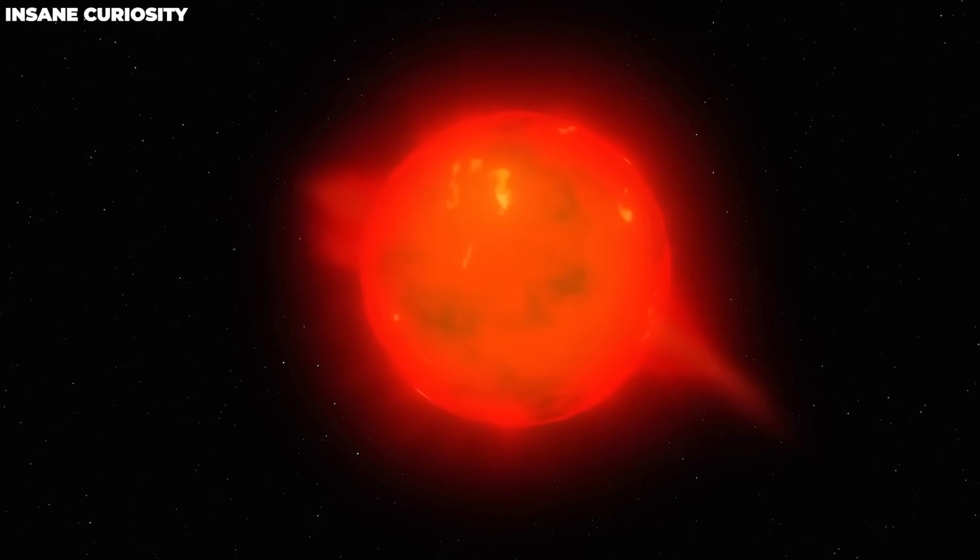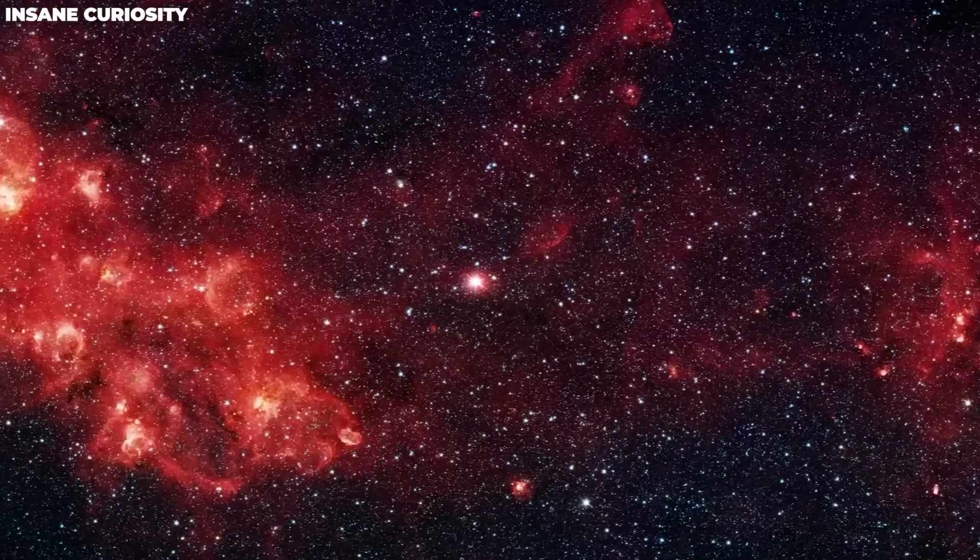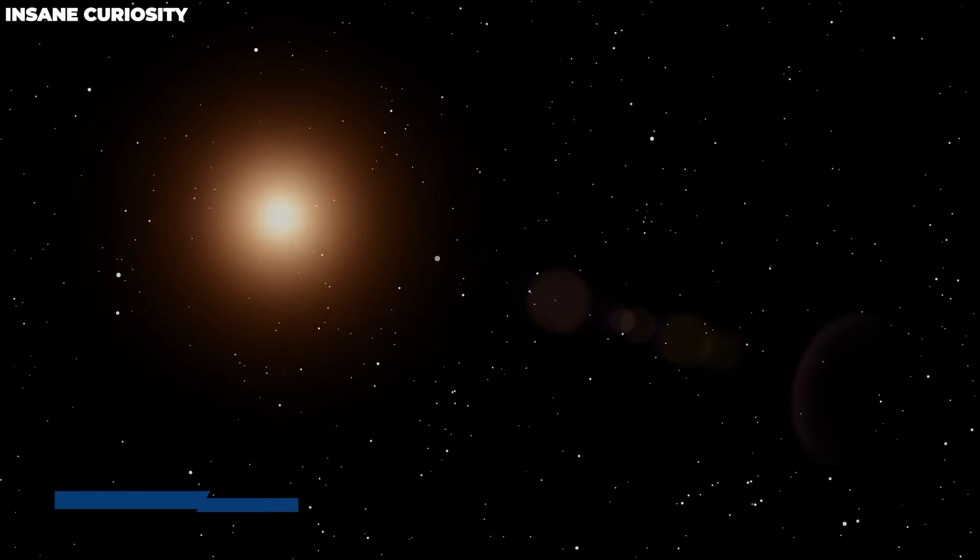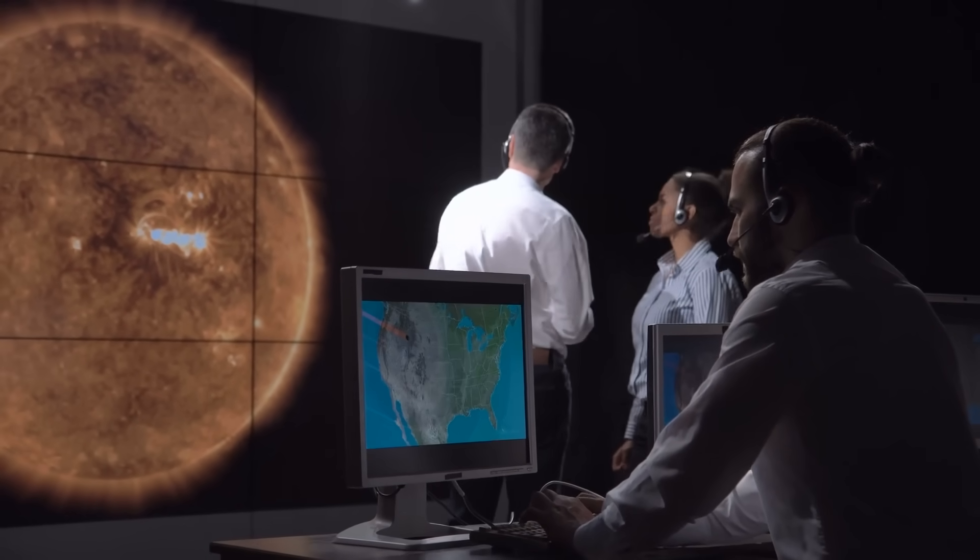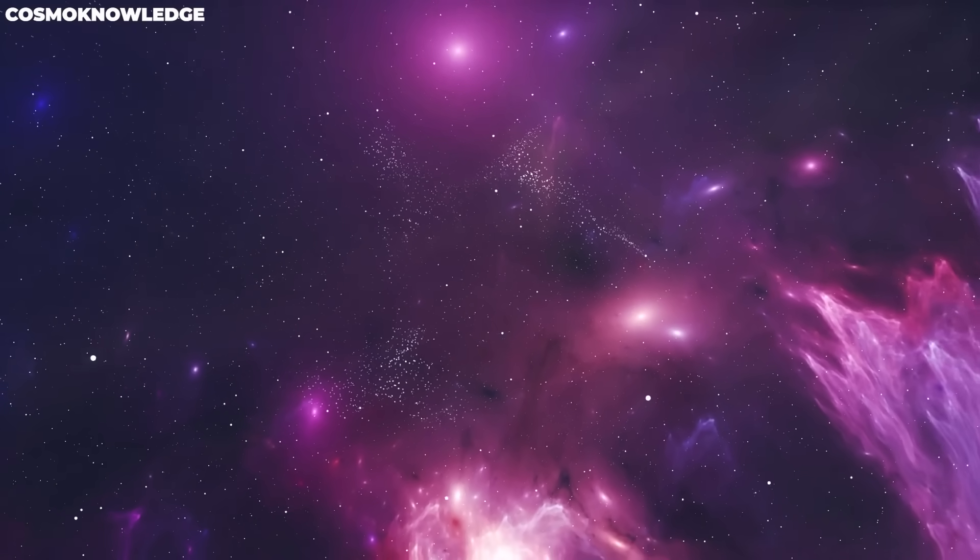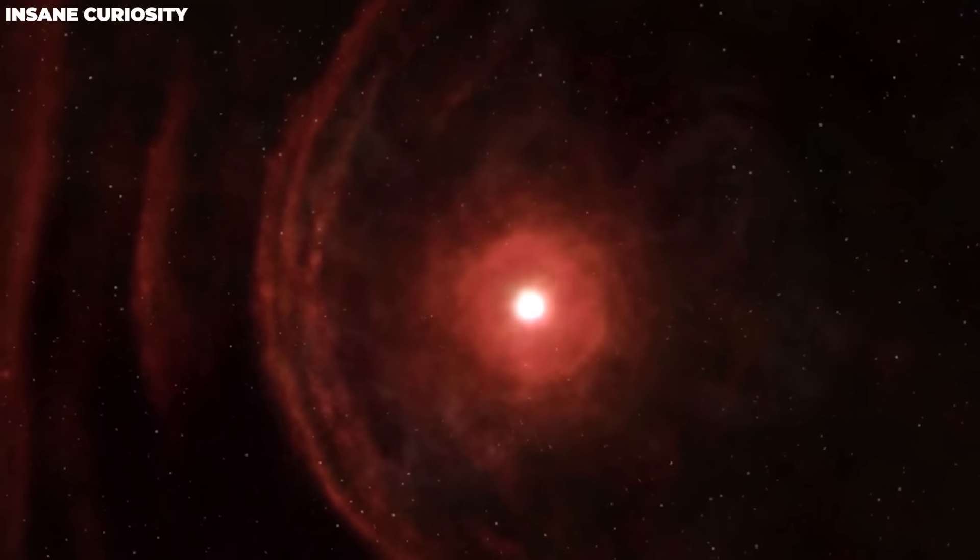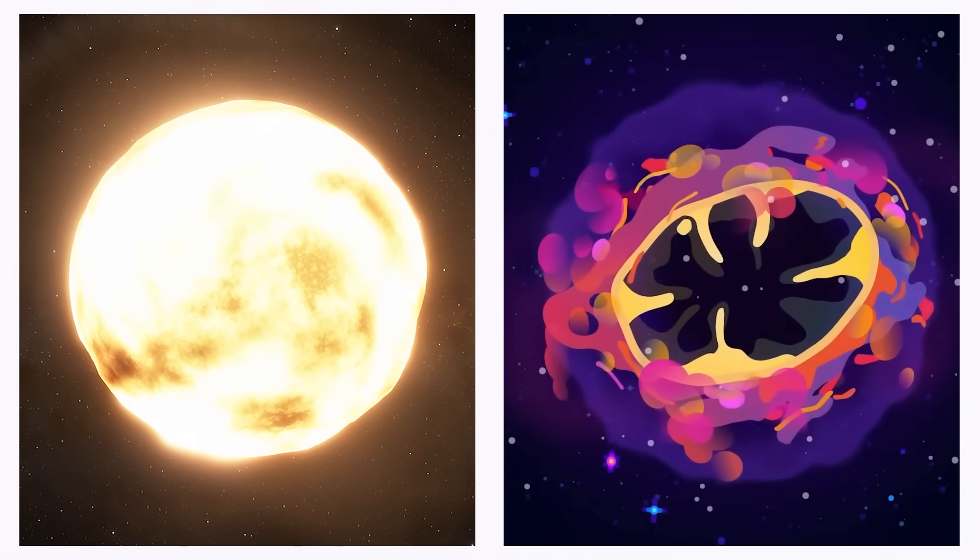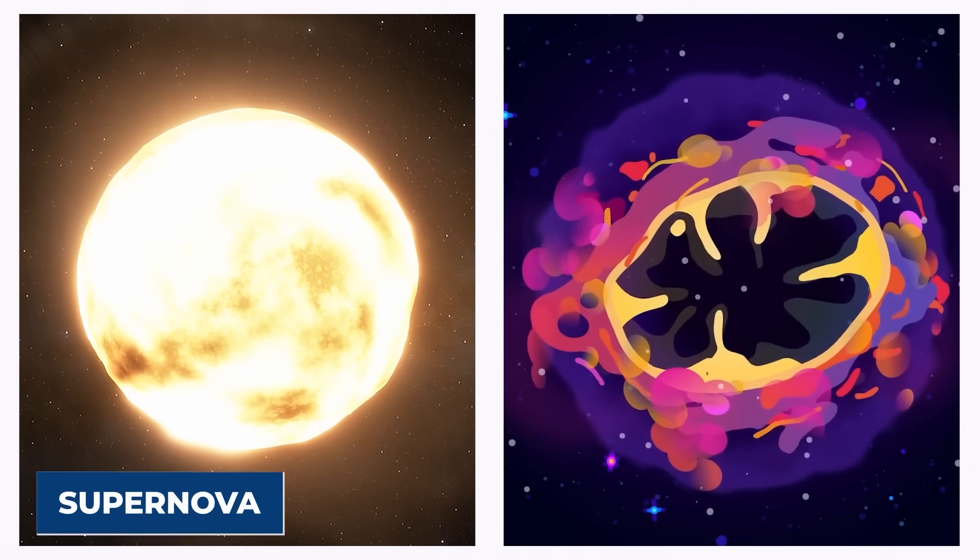Even though Betelgeuse didn't fully stop glowing, it wasn't the same because it had become much less bright, shining at a magnitude of about 1.6. Scientists quickly began to look into why they were seeing the 10th brightest star in the sky in this strange way. Scientists have had to make a scary statement based on their research, which culminated in the strange signs the star has recently shown.